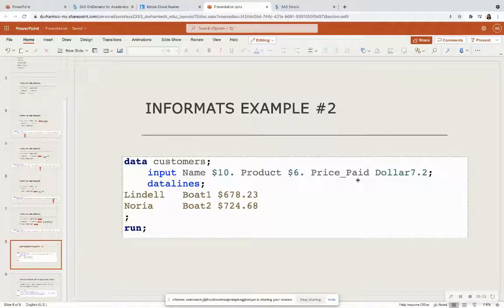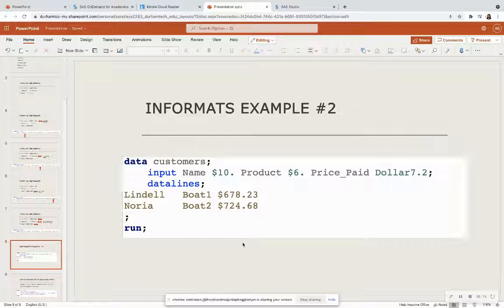And then the price paid is the dollar 7.2. So if I count all of the values, the dollar sign is 1, 2, 3, 4, 5, 6, 7, I see that this number is of width seven, and it has two decimal places. So that's how we get the 7.2, and we're going to see this example momentarily.